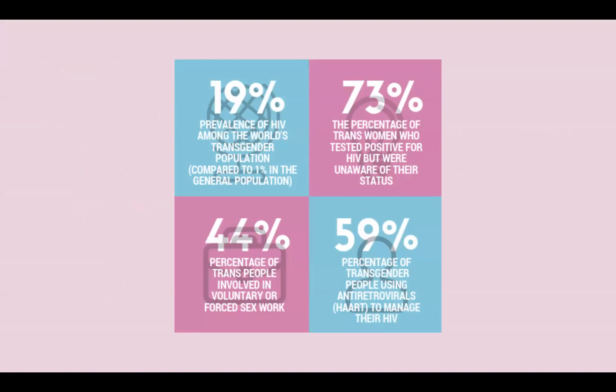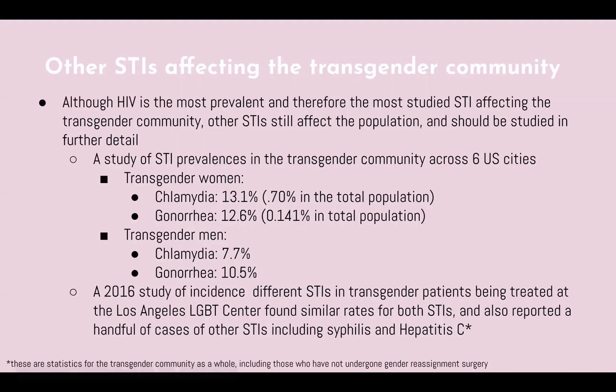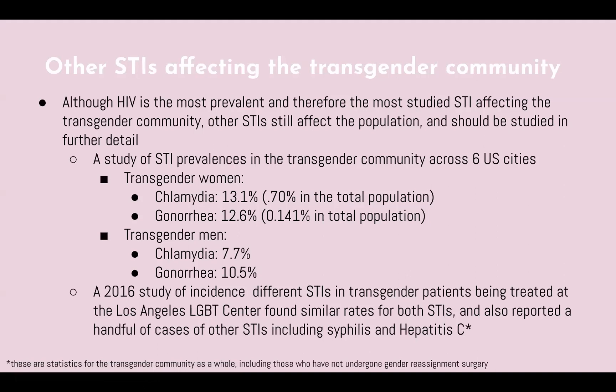Ninety percent of HIV cases are among the world's transgender population. Seventy percent of transgender women who tested positive for HIV were unaware of their status. Forty-four percent of transgender people are involved in voluntary or forced sex work, and 59 percent of transgender people use antiretrovirals to manage their HIV. There are also other STIs in the transgender community, including chlamydia and gonorrhea: 13 percent for chlamydia and 12.6 percent for gonorrhea among transgender women, and 77.7 percent for chlamydia and 10.5 percent for gonorrhea among transgender men. A 2016 study of STI incidence at the LGBT center in Los Angeles also reported a handful of cases of syphilis and hepatitis C.